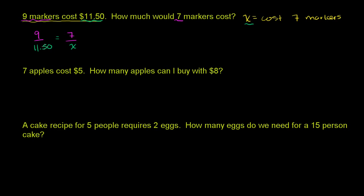And you could flip both sides of this, and it would still be a completely valid ratio. You could have $11.50 to nine — the ratio between the cost of the markers to the number of markers you're buying — is equal to the ratio of the cost of seven markers to the number of markers, which is obviously seven. All I would do is flip both sides of this equation to get that one.